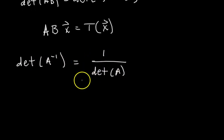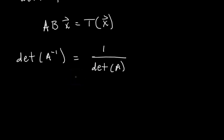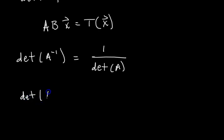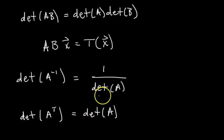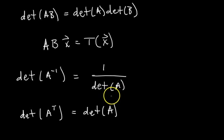The last property: the determinant of A transpose equals the determinant of A — det(Aᵀ) = det(A). The transpose just means you flip the rows and columns. These three properties are really important, so keep them in mind. We're now going to use them on a common exam problem.